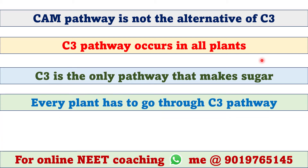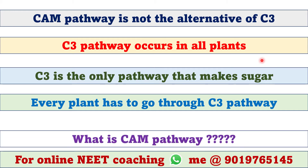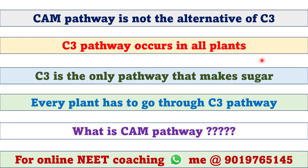So every plant has to go through the C3 cycle in order to produce glucose. Then what is CAM pathway?